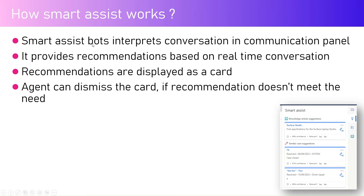Smart assist bots interpret the conversation in the communication pane, providing recommendations based on real-time conversation. Every word the user types gets stemmed and interpreted — it searches for those particular keywords within the knowledge base or within cases and tries to surface recommendations. It also gives a confidence score; in this example it shows 66% confidence.